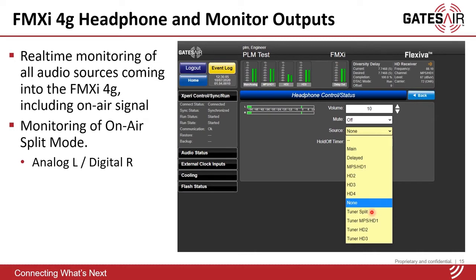You can also put the tuner in split mode, which is its normal operating mode when it does the time correction. It puts the analog in the left and the digital in the right, and tries to correlate and match those two together. So you can hear what that sounds like as it's ramping up to that delay or while it's managing that delay.